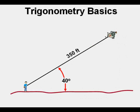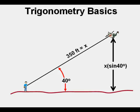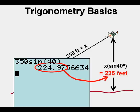Let's try another problem. Fred is flying a kite. He has let out 350 feet of string and his string makes a 40 degree angle of elevation from the ground. He wants to know how high his kite is off the ground. To set it up he labels the hypotenuse X. Then he labels the height of the triangle X sine 40 degrees and calculates that the kite is 225 feet off the ground.